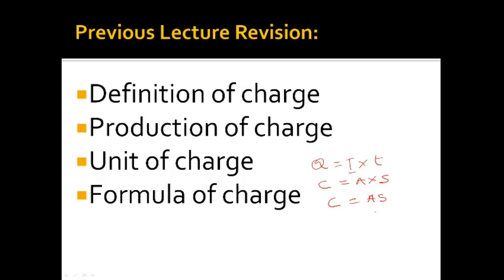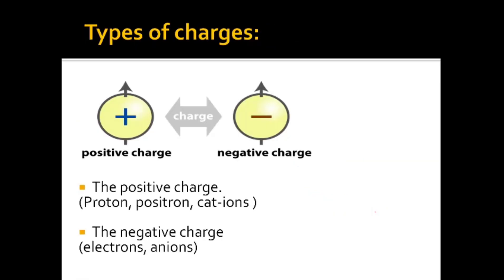Now let's go into today's lecture: types of charges. There are two types of charges — the positive charge and the negative charge. The positive charge is the property of those particles that move from the positive pole to the negative pole. Examples of positive charges include protons, positrons, and cations.